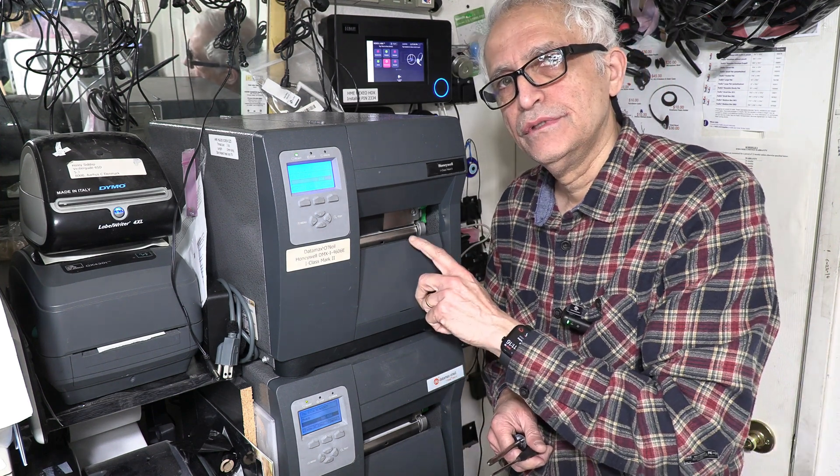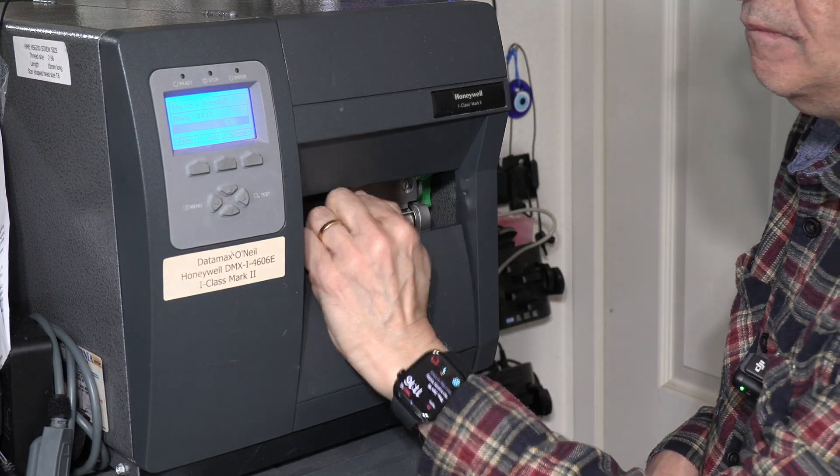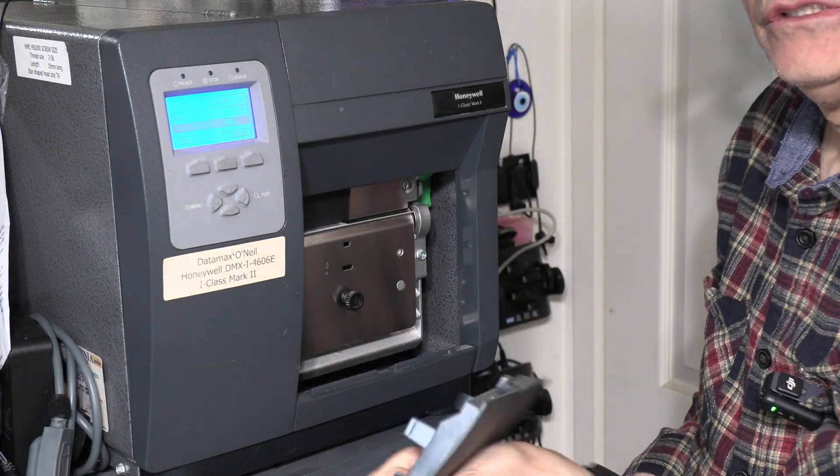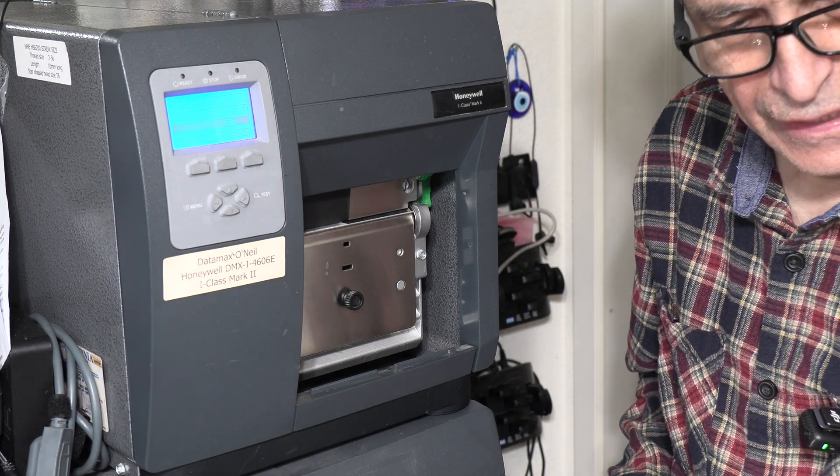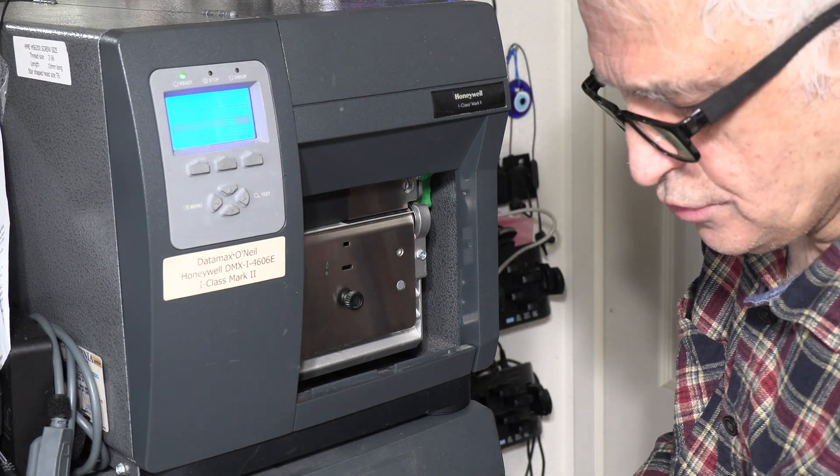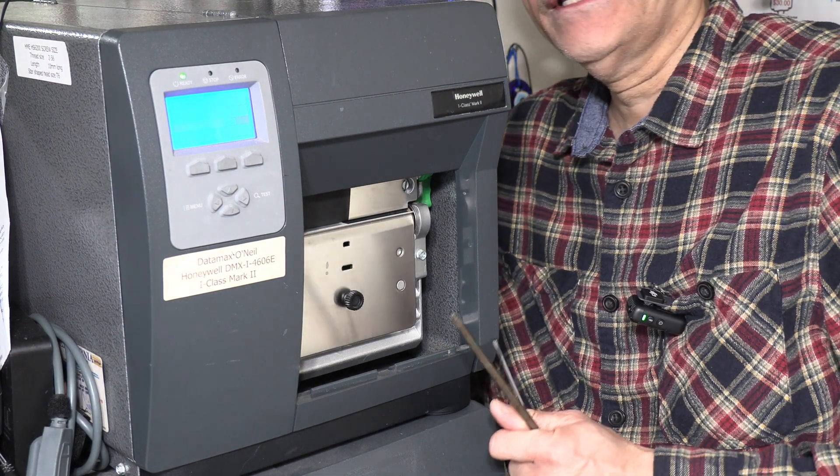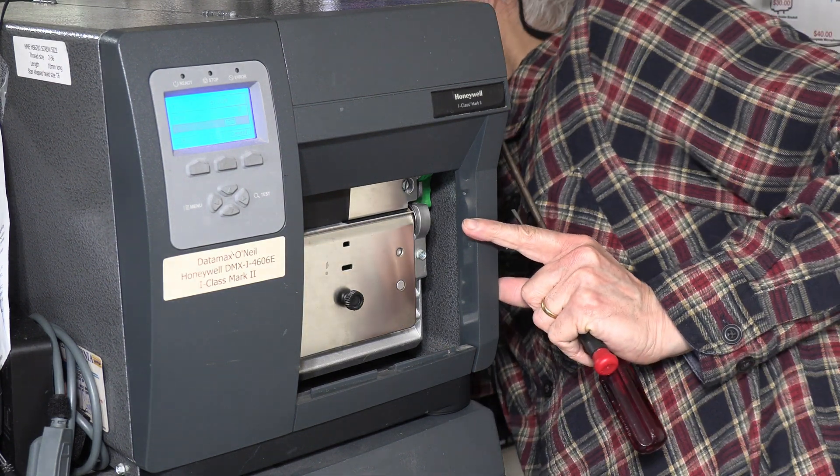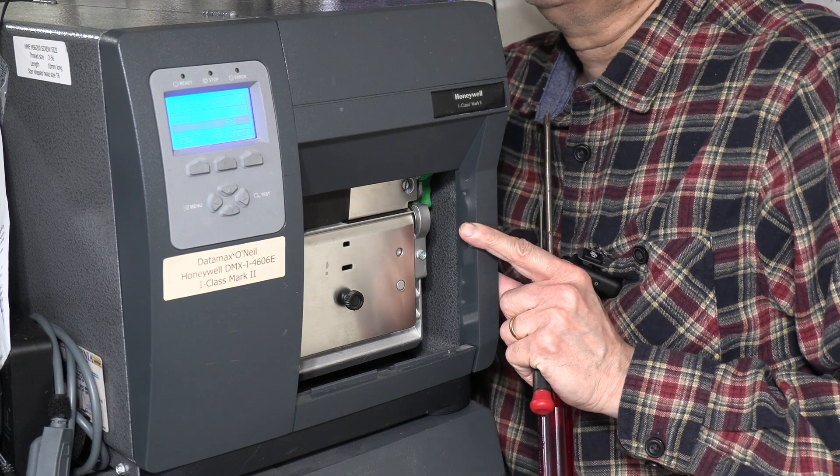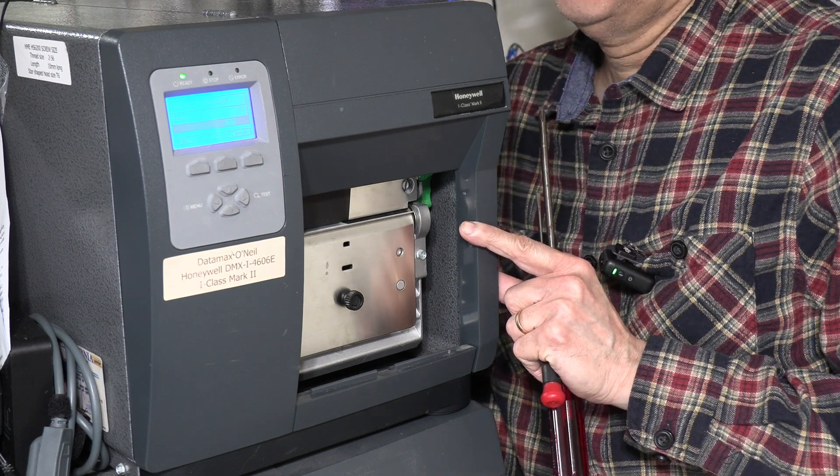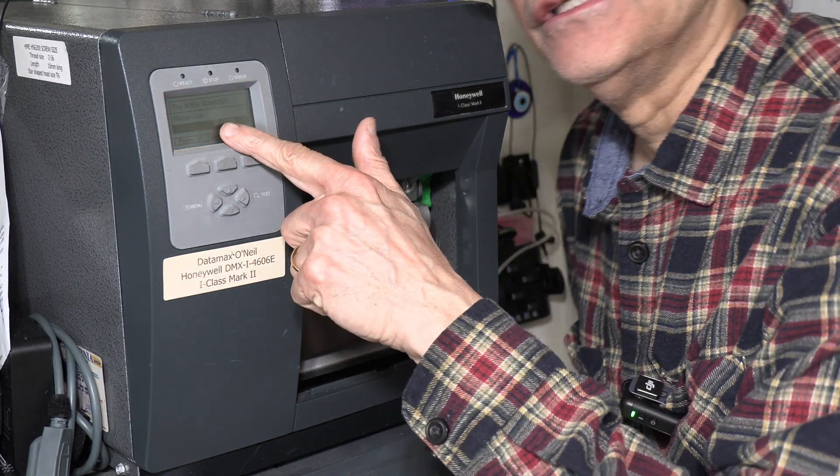The first step is we have to remove this panel. You remove the panel just like that, simple. And the second step is to turn off the power. So I'm going to reach out in the back and I'm going to unplug it. That is very important so that you don't burn any circuit boards. As you can see, I unplugged it and the screen went off.